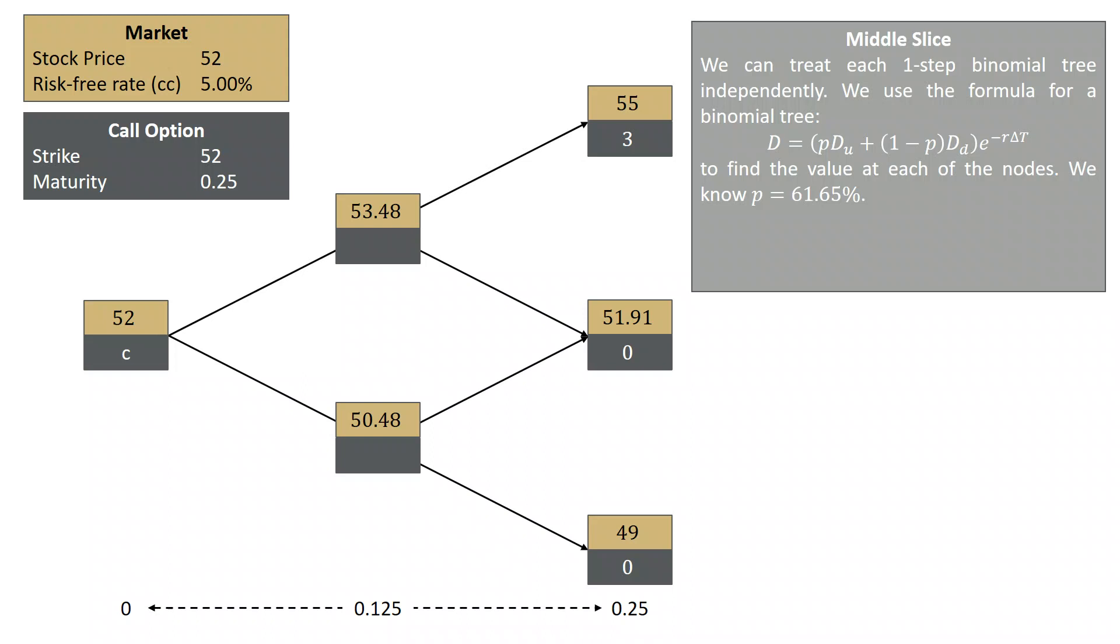So now we can work through our tree. The value of the option at the node where the stock is 53.48 is 1.84: 0.6165 times 3 plus 0.3835 times 0, all multiplied by e to the minus RT.